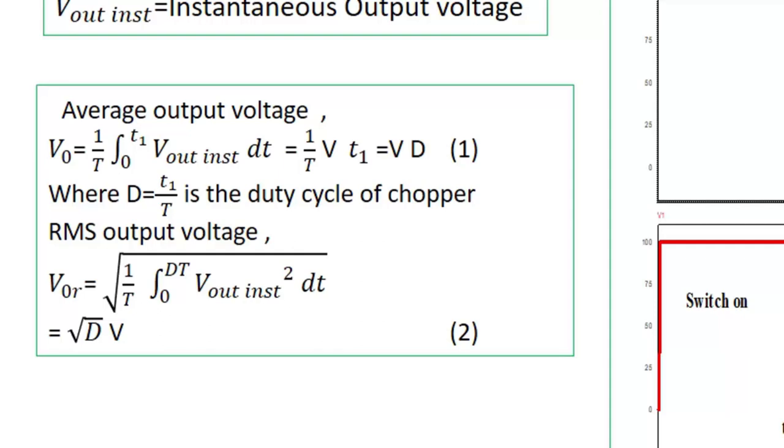Then RMS output voltage equal to square root of 1 by complete time period, 0 to on time, V_out instantaneous squared dt. And you will get RMS output voltage equal to V into root D.